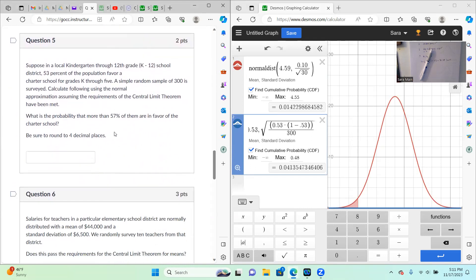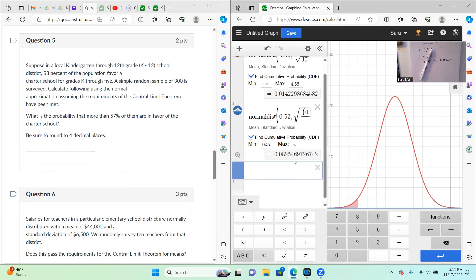Then I ask another question. What is the probability that more than 0.57? So then that time, my minimum is going to be 0.57 and my max is going to be infinity. So that is 0.0825.